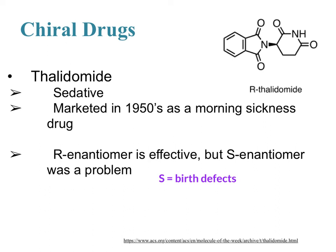Only the S enantiomer — not the R — causes birth defects. There was a whole epidemic: children were born with severely altered limb development in a very tragic way. Their arms didn't grow to full length — they still had hands and feet, but without full-length arms and legs, they weren't fully mobile. This was an example demonstrating that it actually matters which enantiomer you have, and that racemic isn't always acceptable.